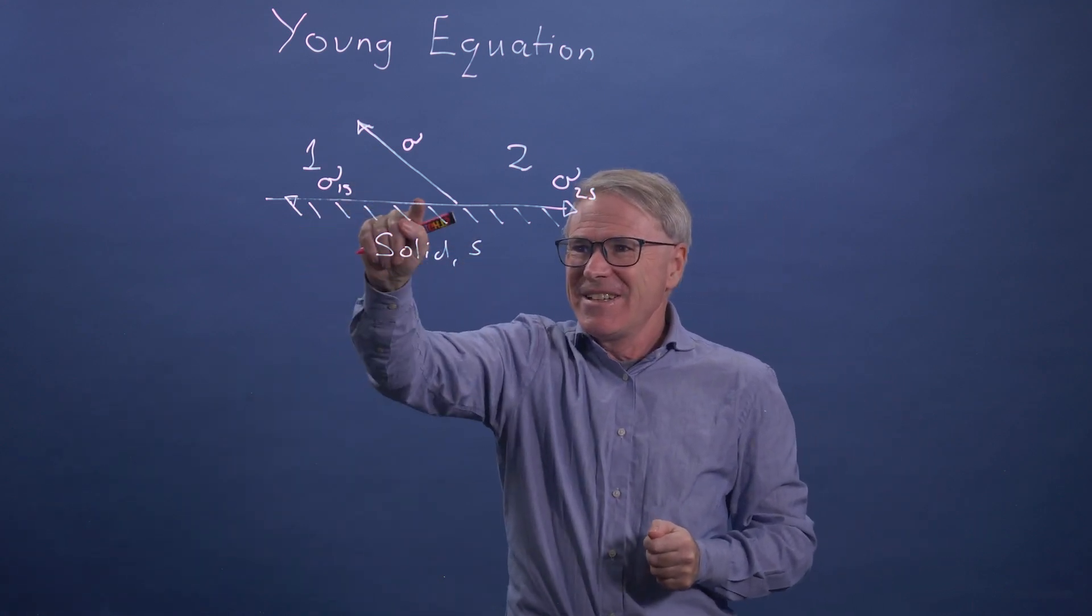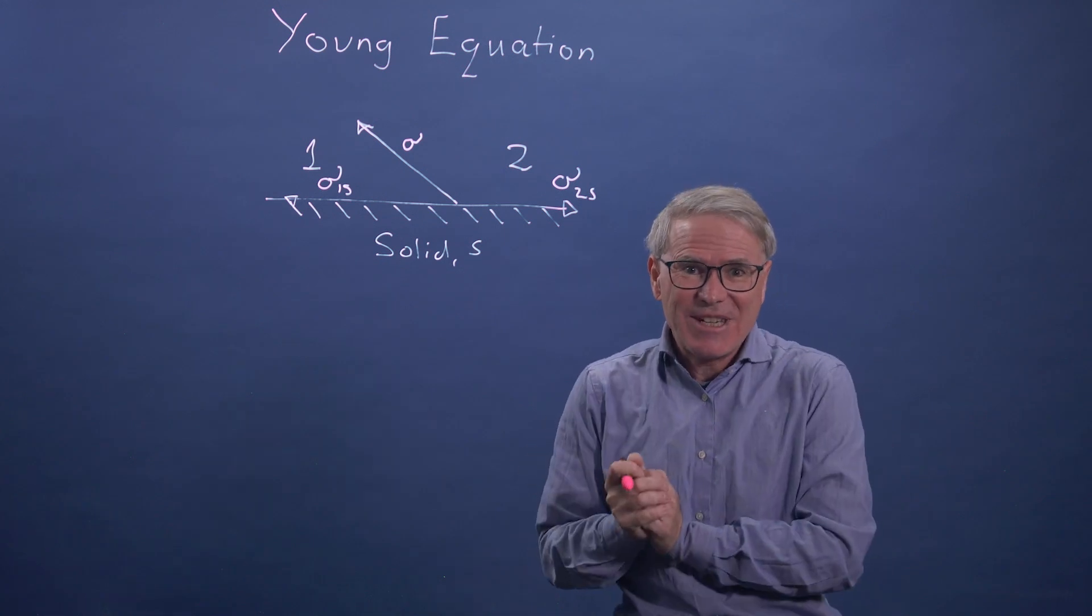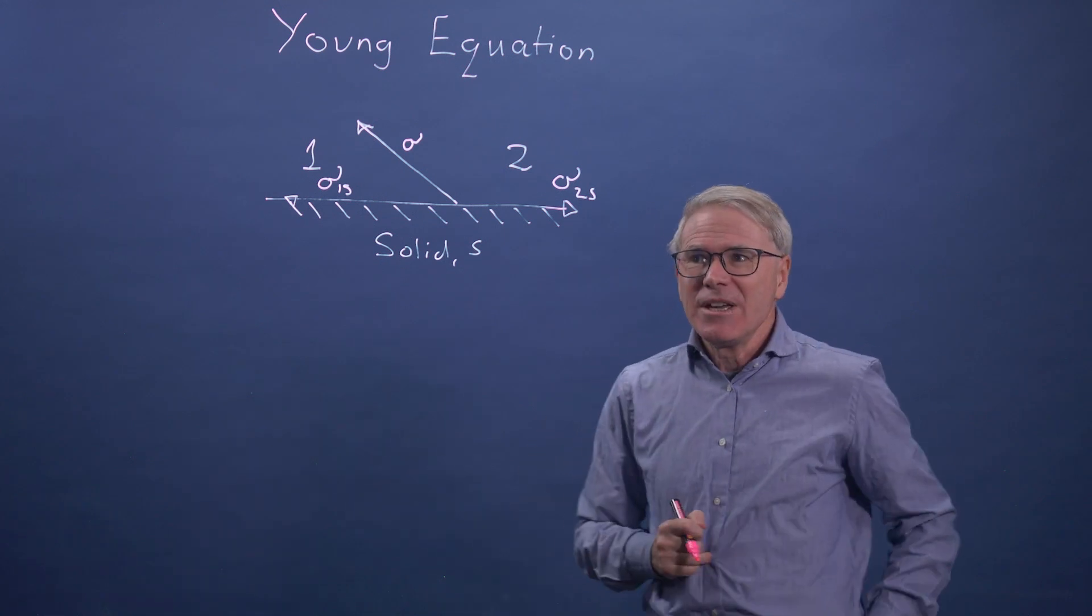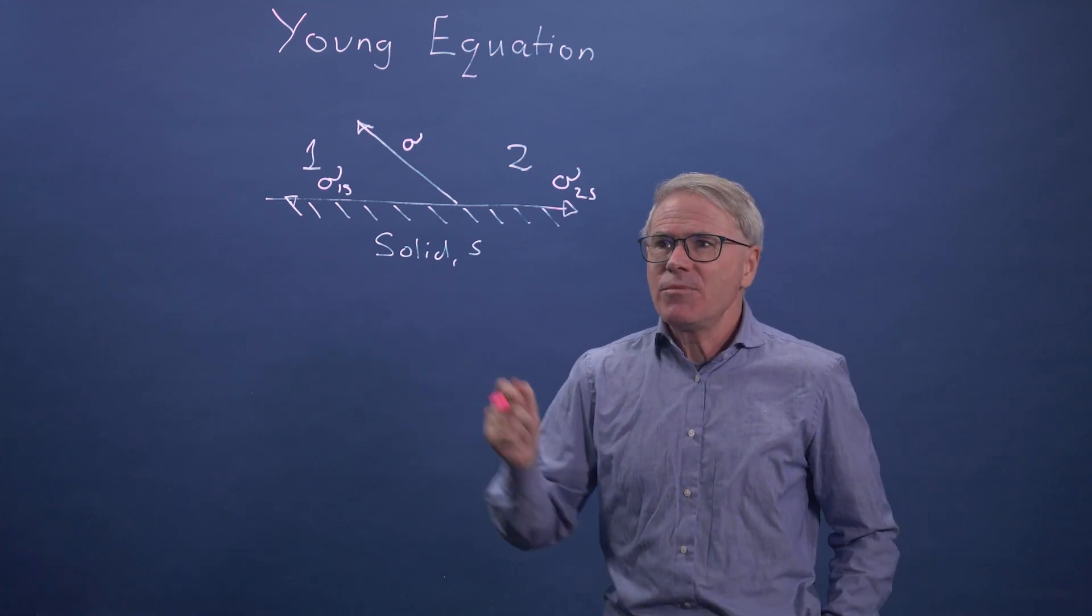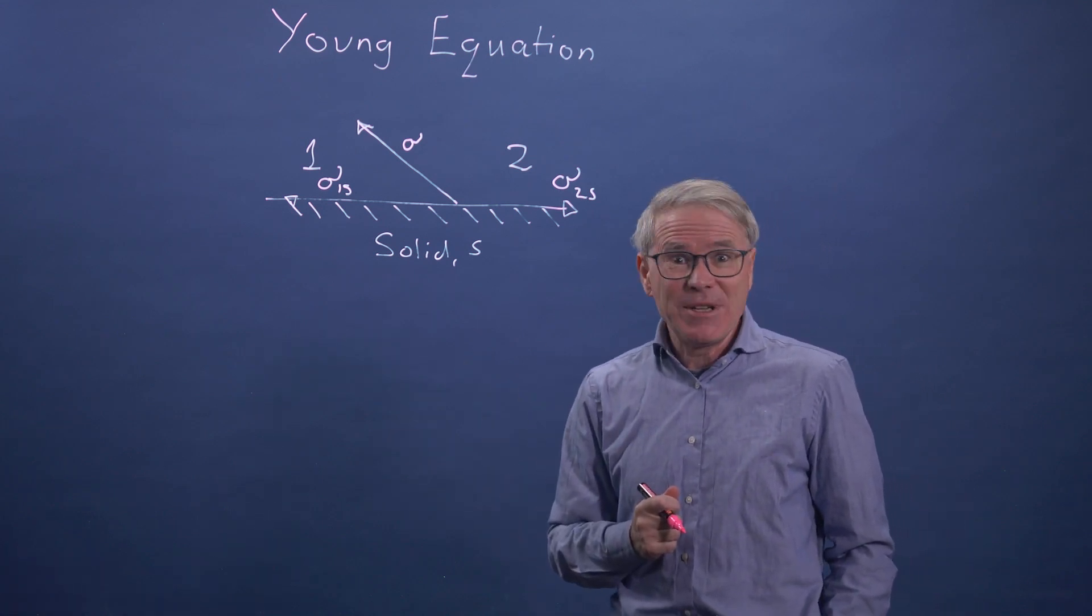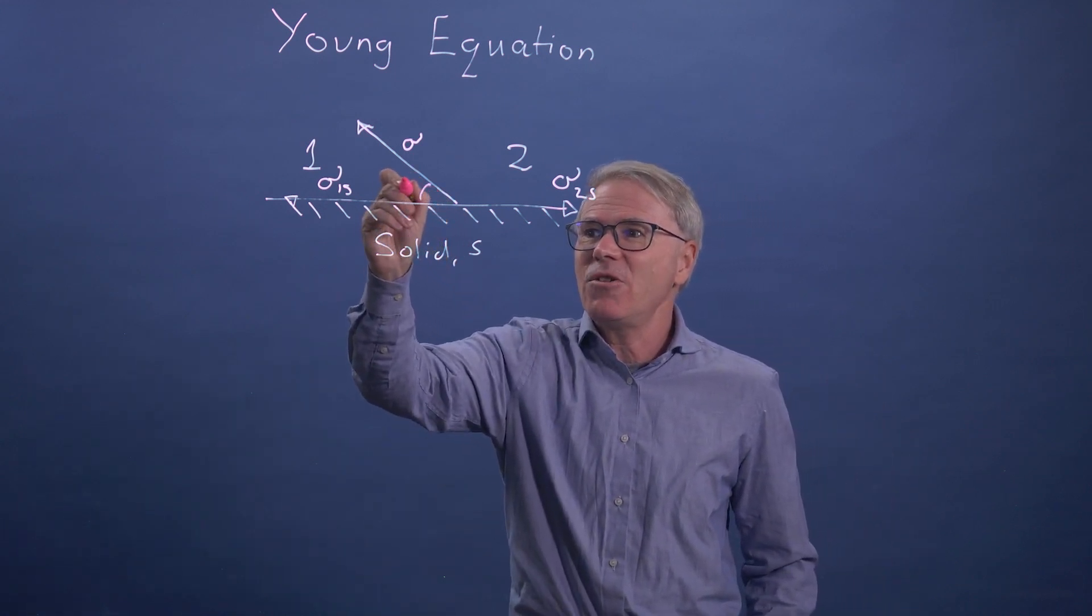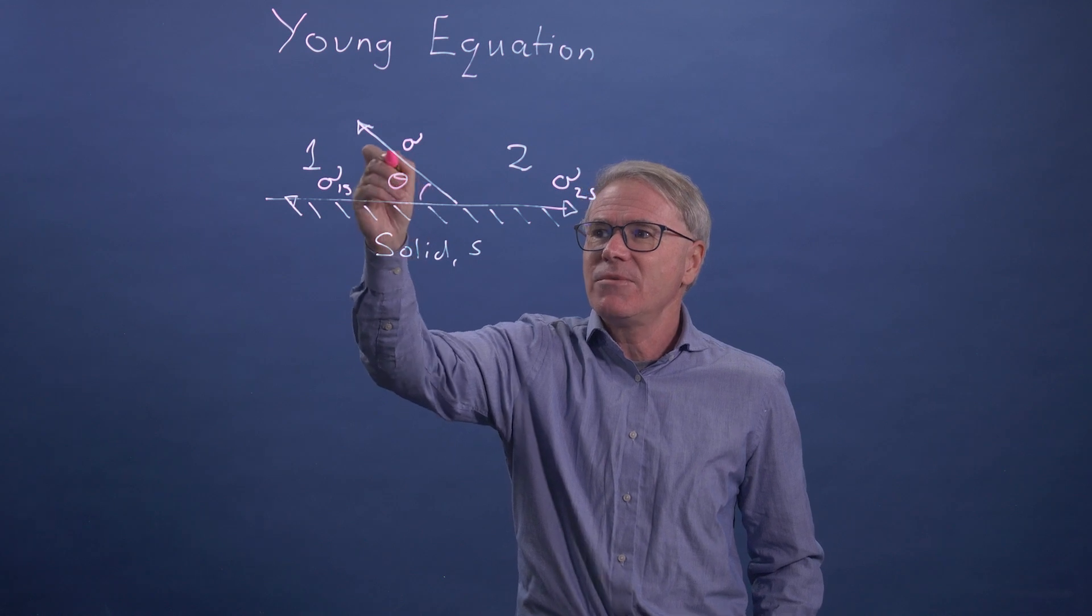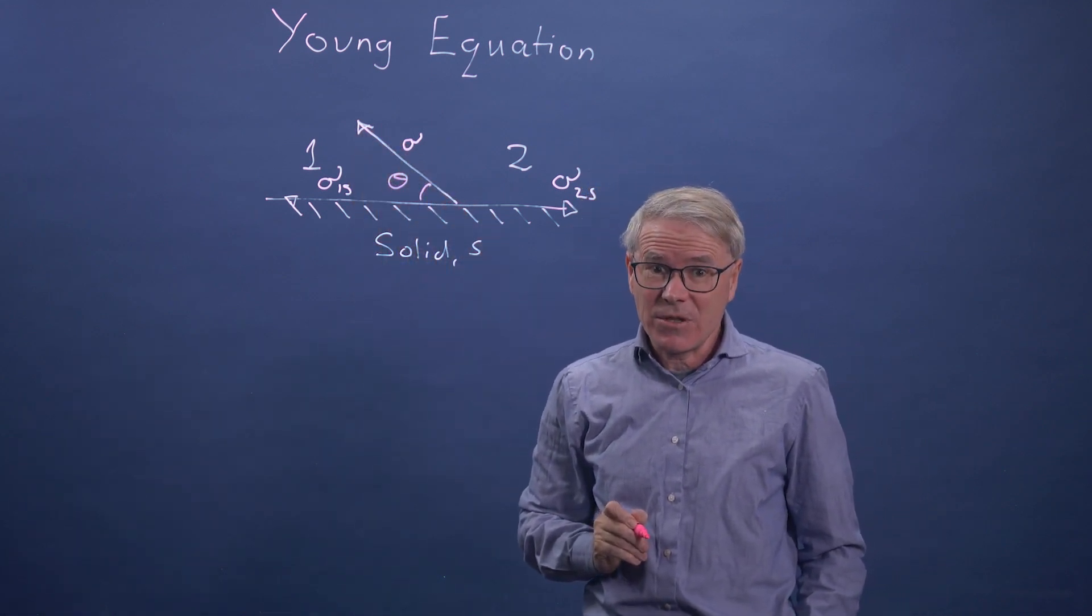On the other hand, this interfacial tension, this energy per unit area, is pulling back. So there's a force balance. We can imagine this as a force balance, and if we do, the force balance is relatively straightforward. If we define a contact angle theta, which is the angle with which phase one and phase two hit the solid.